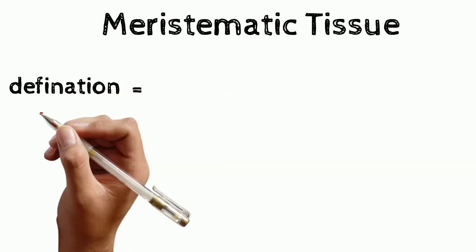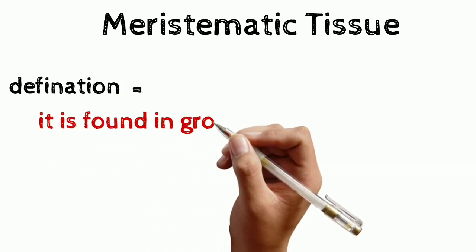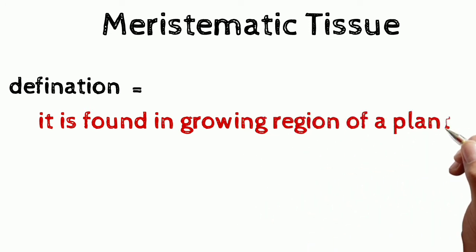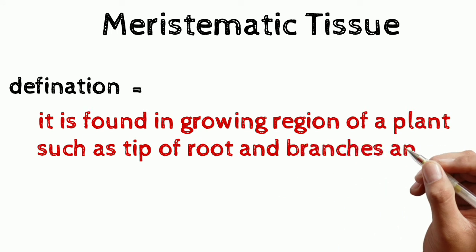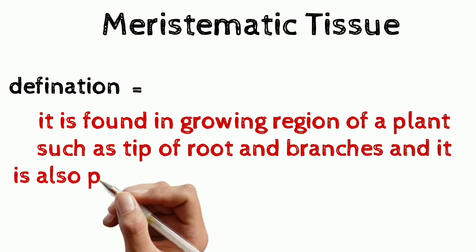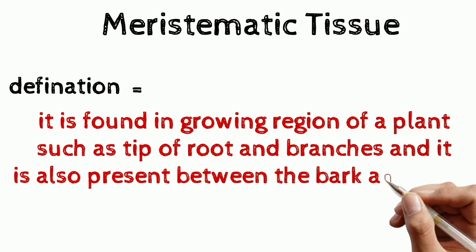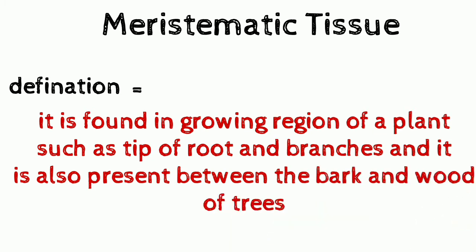So let's start with the definition of meristematic tissue. It is found in growing regions of a plant such as tips of roots and branches, and it is also present between the bark and wood of a tree.